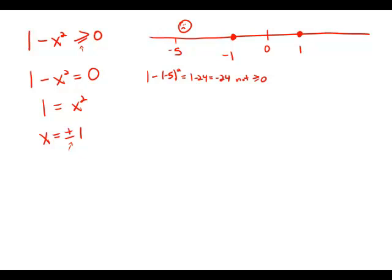Now if I try a value in the middle region, suppose I try 0. Well, 1 minus 0 squared is 1, and that is greater than or equal to 0. So this middle region works.